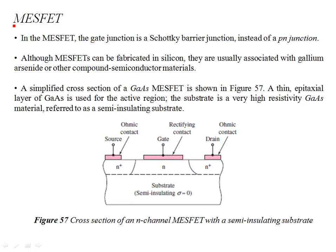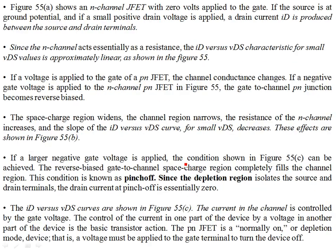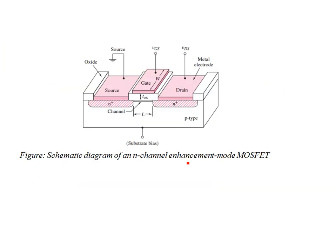This lecture covers the basic construction and physics of the Metal Semiconductor Field Effect Transistor (MESFET). Unlike MOSFETs, where the gate is insulated by a thin oxide layer between the gate and the substrate, in the MESFET there is no gate insulation. There is no gate current and no substrate current in MOSFETs because the gate is insulated by oxide, but a field effect is still needed to establish a channel.